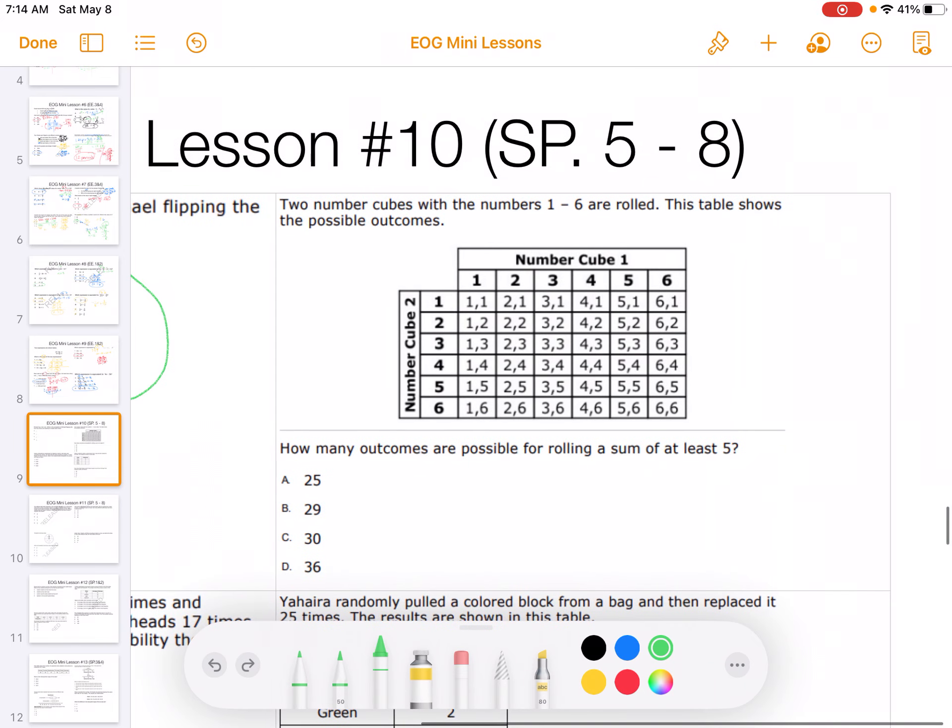Alright, then it says two number cubes are rolled numbered 1 through 6. These are the possible outcomes. So the first number represents the first die, the second number represents the second die. How many outcomes are possible for rolling a sum of at least 5? So at least 5, so 5 or higher.